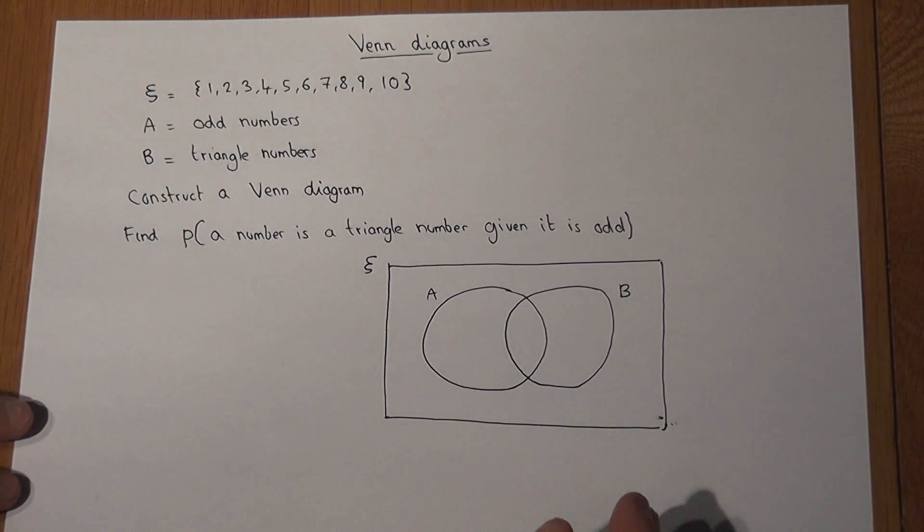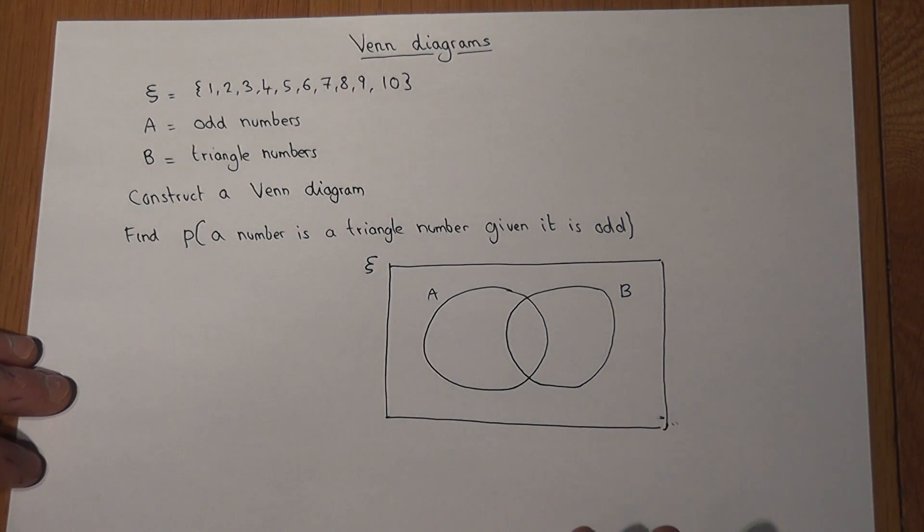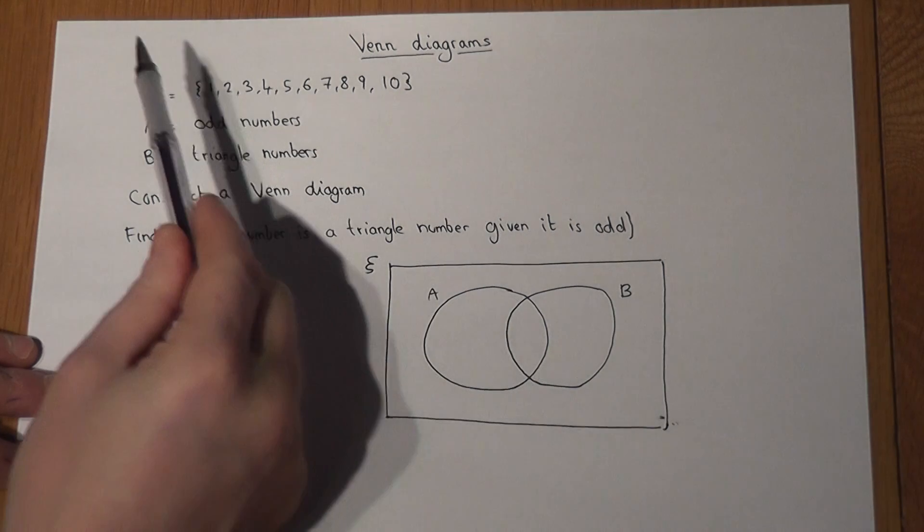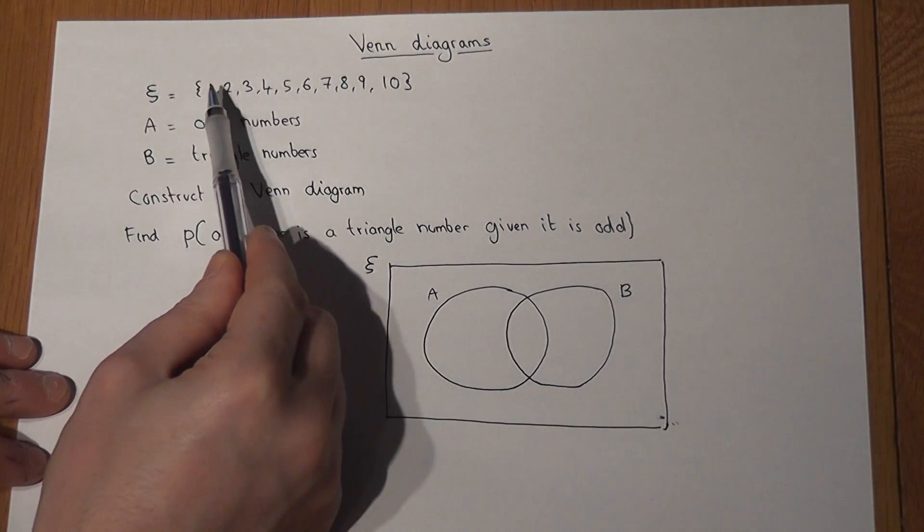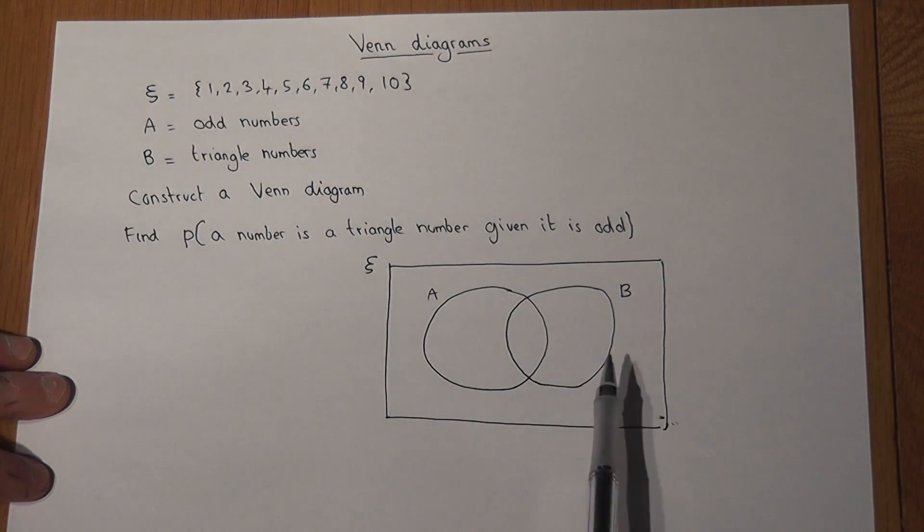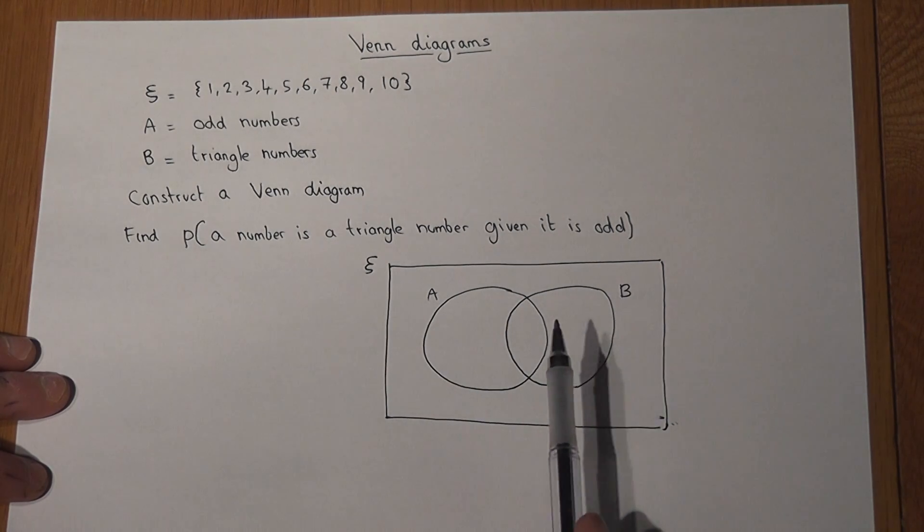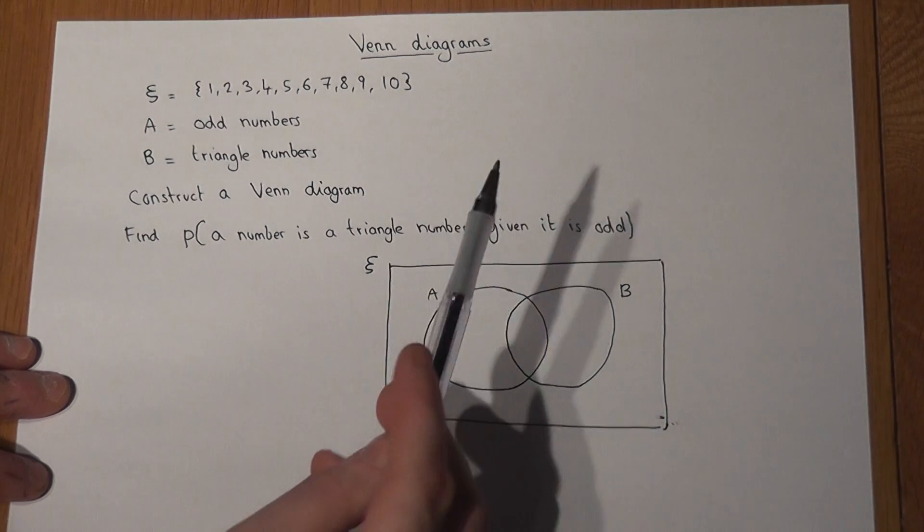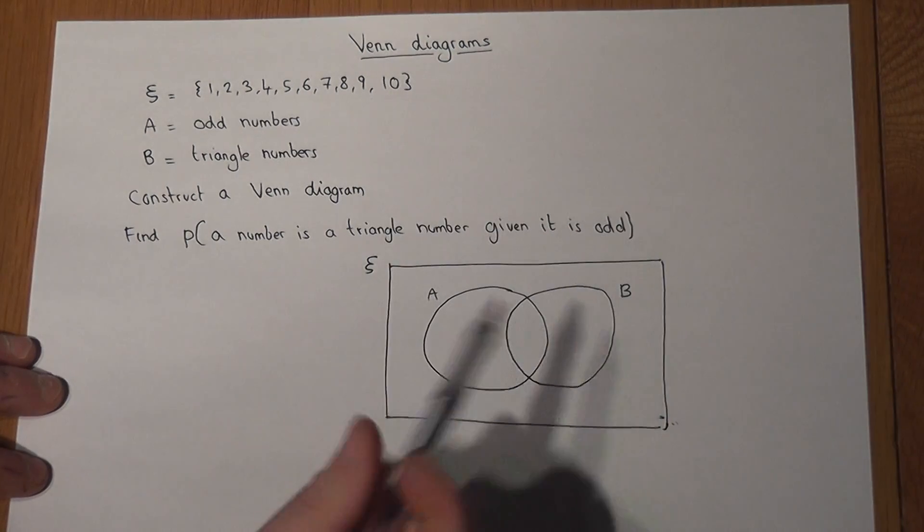This video revises Venn diagrams and how they can be used to represent information. Now this first line tells me the numbers which I can use in my Venn diagram. So we've only got the numbers from 1 to 10 and they're all whole numbers or integers.